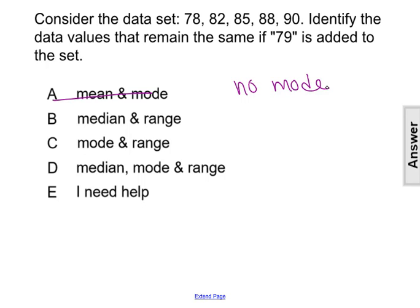If we add 79 into the mix, you'll have 78, 79, 82, 85, 88, and 90. There's still going to be no mode when you add in 79 because 79 is occurring once. Every other number is occurring once. So the mode is currently staying the same.